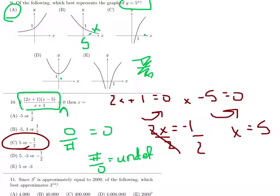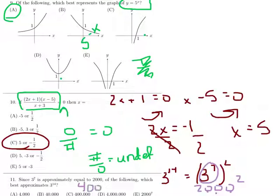Okay, and number 11. Since 3 to the 7th is approximately equal to 2,000, of the following which best approximates 3 to the 14th? Well, 3 to the 14th is just 3 to the 7th squared, right? Because when you have a power to a power, you multiply the powers. So that means that if 3 to the 7th is approximately equal to 2,000, then that must mean that I'm going to take 2,000 - which is this, it's approximately 2,000 - and I'm going to square it. Just square this in your head. You square the 2, and to square anything with 0s, that's 3 zeros for the 1, 3 zeros for the other. Okay, so it's D.